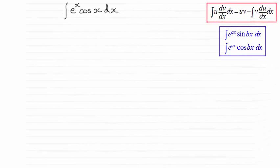Hi there. Now I'm assuming that you've seen a previous tutorial where I showed you how to integrate functions like this where we had e to the ax times sine bx or e to the ax times cosine bx, where a and b were constants.